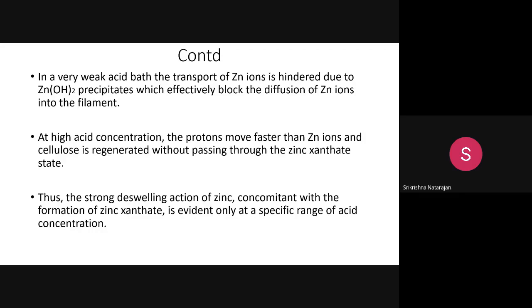In summary: step 1 — steeping the wood pulp with alkali; step 2 — shredding into pieces; step 3 — aging (oxidative depolymerization); step 4 — xanthation with carbon disulfide to enable dissolution; step 5 — filtration and blending; step 6 — ripening to confirm coagulability; step 7 — wet spinning with three ingredients. Viscose rayon is a complex, lengthy process involving many steps.